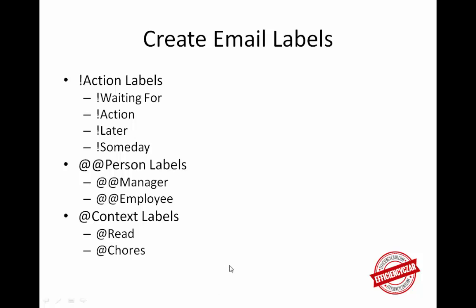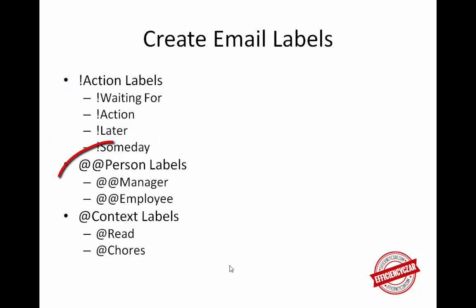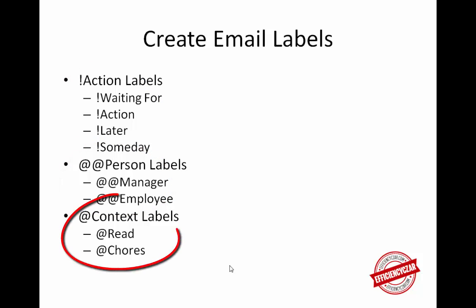The main things we're going to be doing in this course is creating email labels and exercising the principle of getting things done. The email labels are broken into three main parts: we have action labels which have an exclamation mark, person labels which have two at signs, and context labels which have an at sign. You'll get used to those symbols and how you use them.